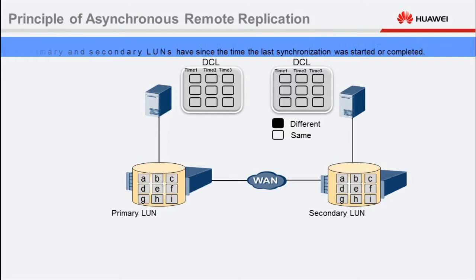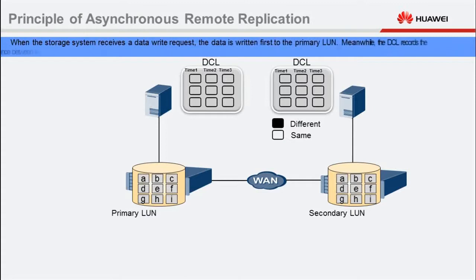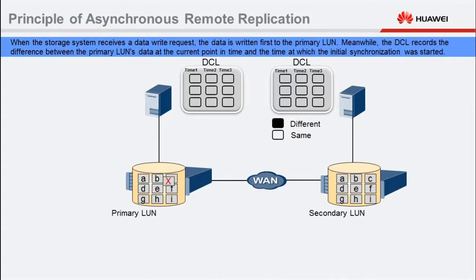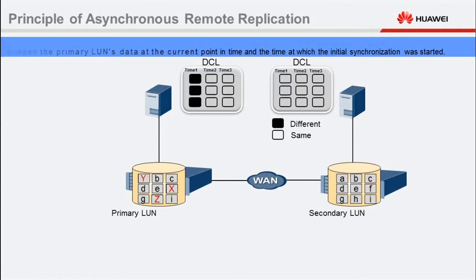The node contains information about the data location and the data writing time. When a storage system receives a data write request, the data is written first to the primary LUN. During this time, the secondary LUN is not writable by default. Meanwhile, the DCL records the difference between the primary LUN's data at the current point in time and the time at which the initial synchronization was started.